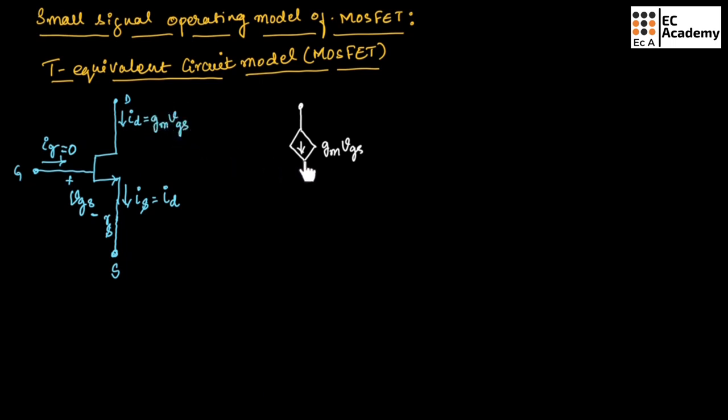This GMVGS can be written in the form of a dependent current source. Across the gate terminal we write the current IG, and across the source terminal we write a resistor equal to RS.